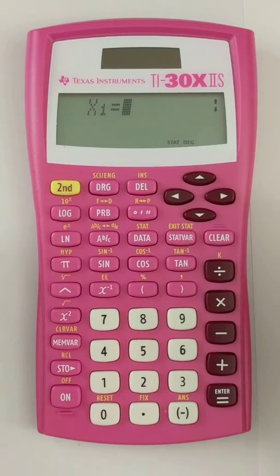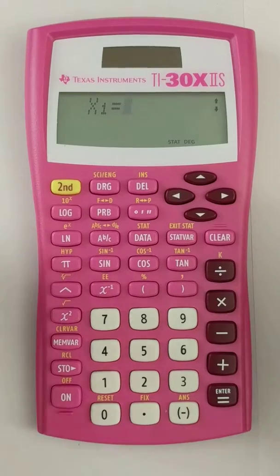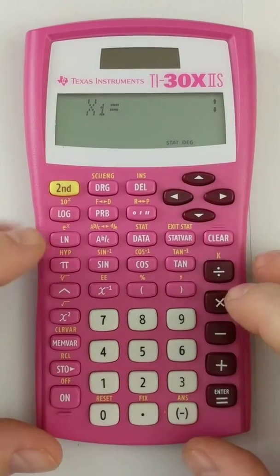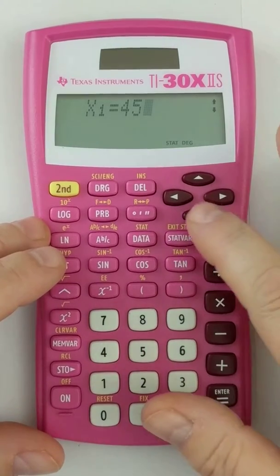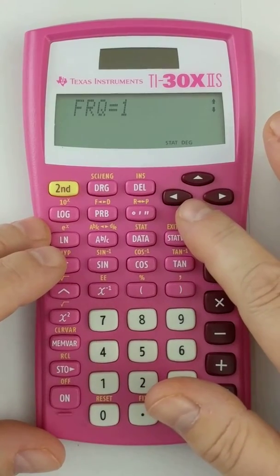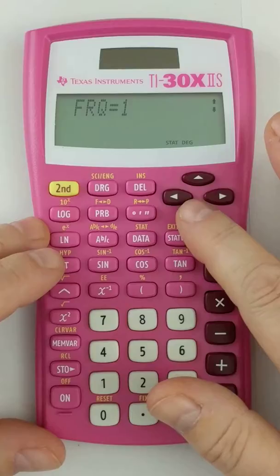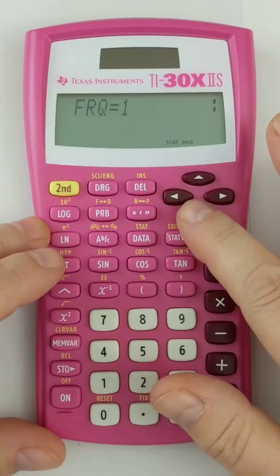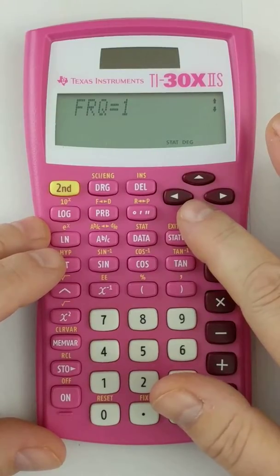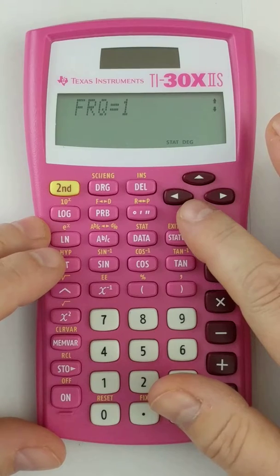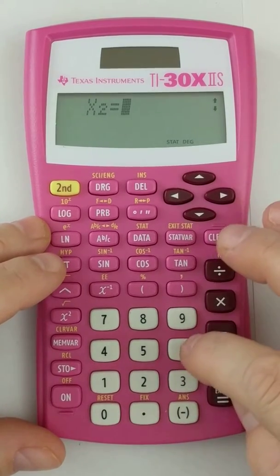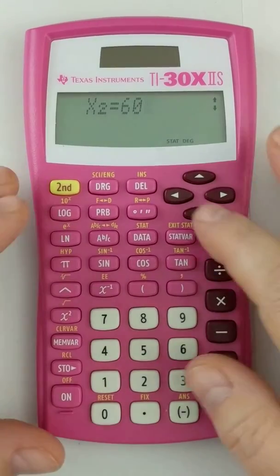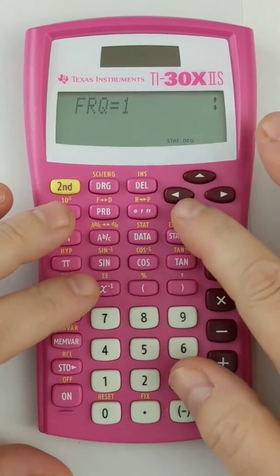Now I'm going to just pick some random numbers to put in for my data. When you put the data in, you're going to put the data value in. So I'm going to put in 45 and press the down arrow, and the next thing it asks me for is the frequency. So if you have frequency data, you would change the frequency to how many times 45 appears. I'm just going to put everything in once, so I'm going to skip past that. So we'll put in 60 down twice.